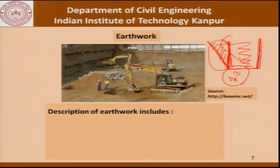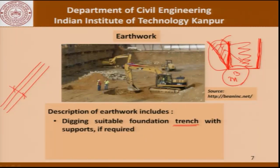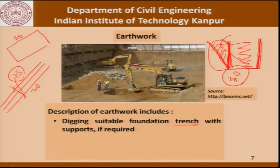Typically, the item description for earthwork should include digging a suitable foundation trench with supports if required. In the case of a boundary wall, the earthwork is largely linear — for example, a 1.3-meter-wide trench dug for 20 meters, turning at corners. The earthwork really involves removal of the excavated earth from that trench.